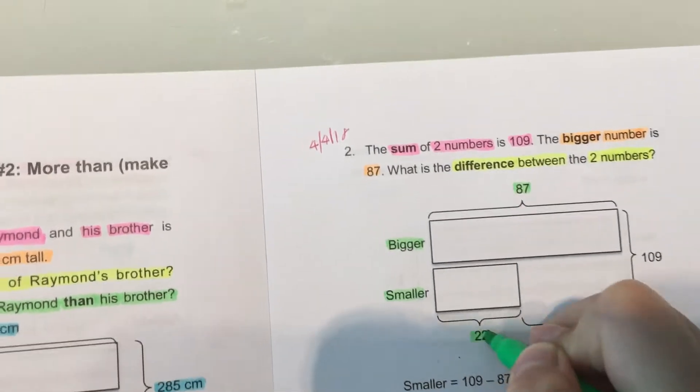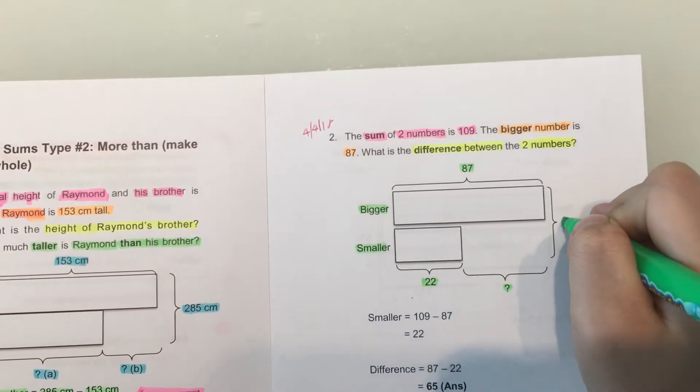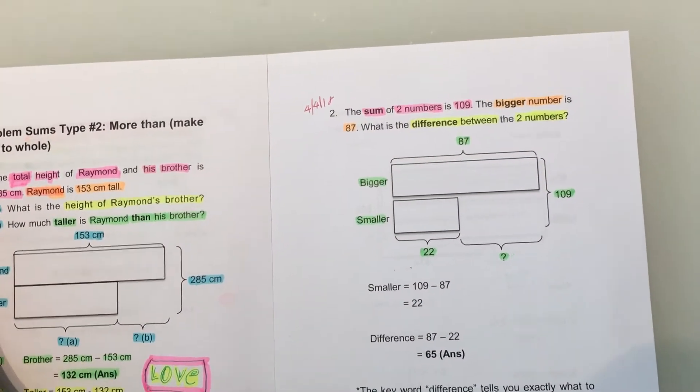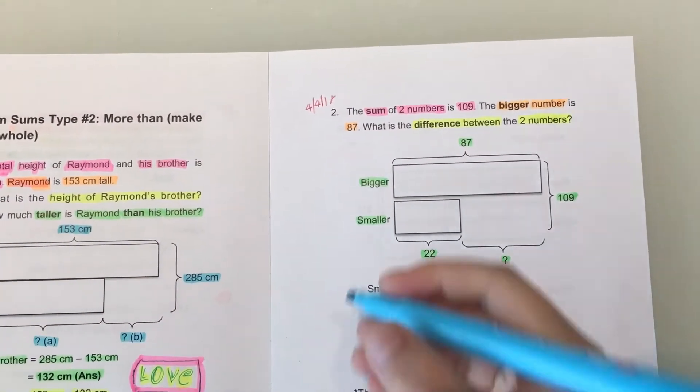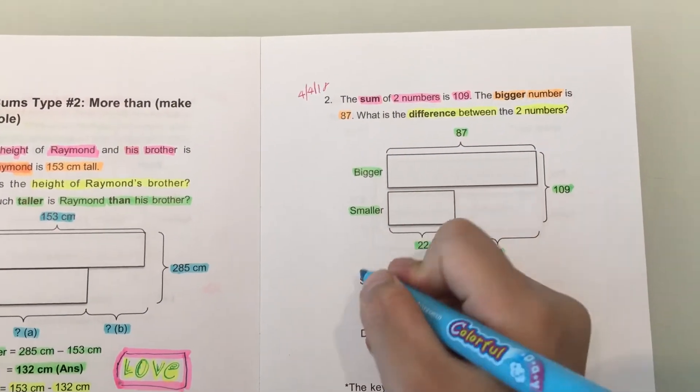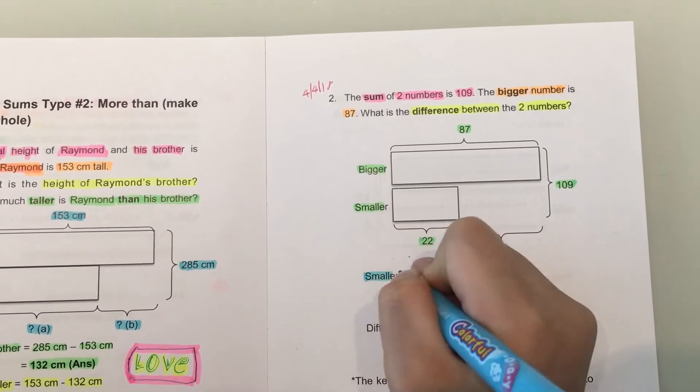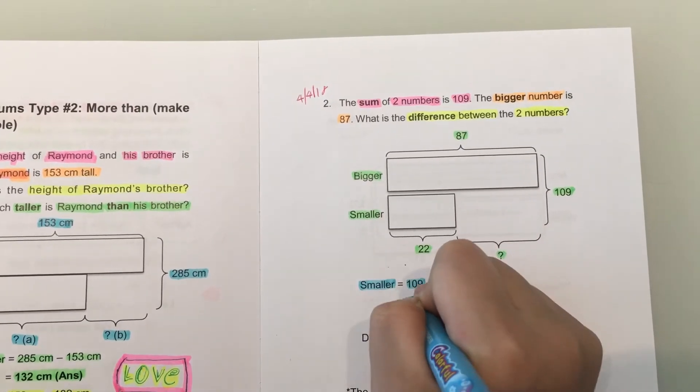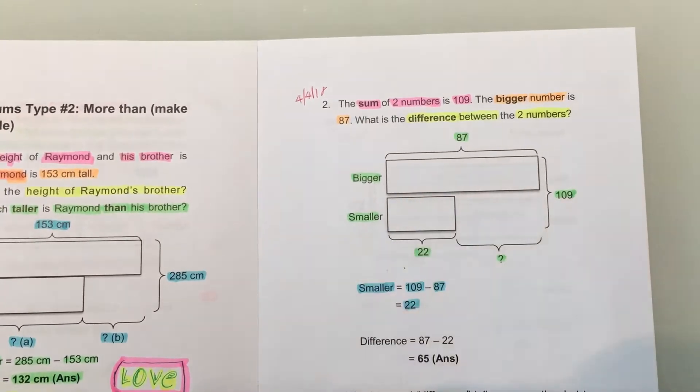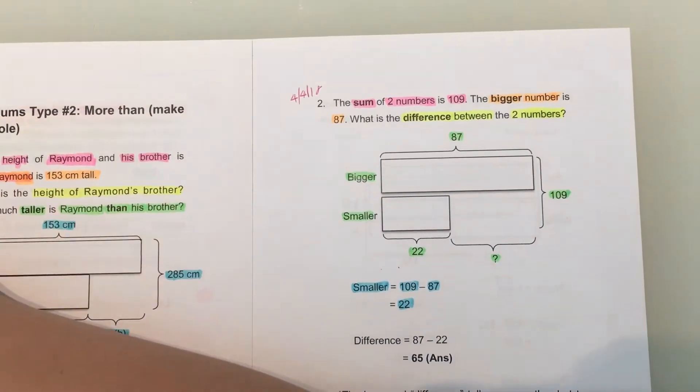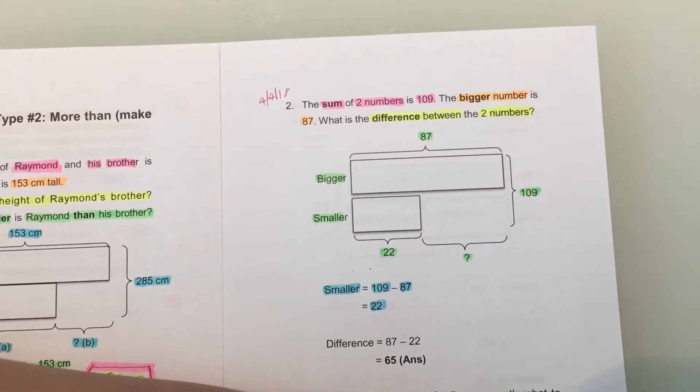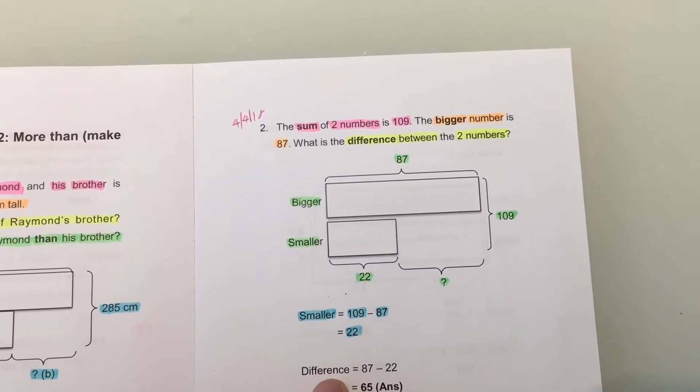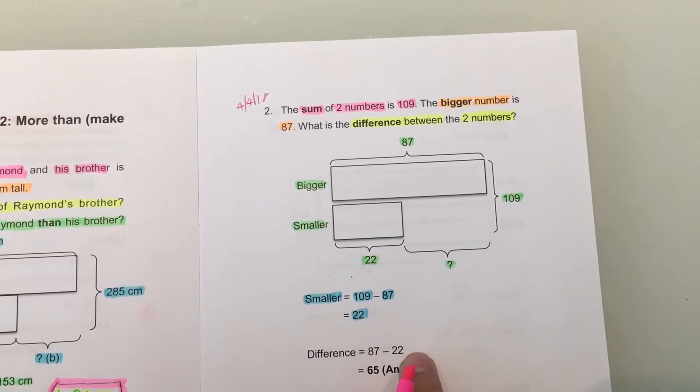22, question mark, 19. Smaller. 29, 82. 1, 2, 3, 4, 5.